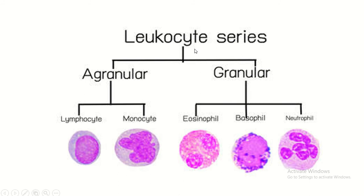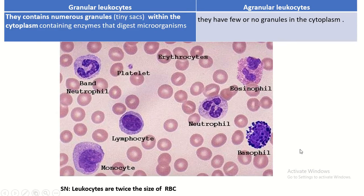The leucocytes are two types: agranular and granular. Within the agranular leucocytes, two cells are present — lymphocyte and monocyte. Granular leucocytes are three types: eosinophil, basophil, and neutrophil.